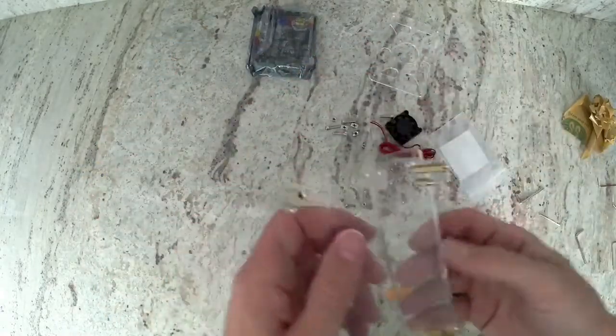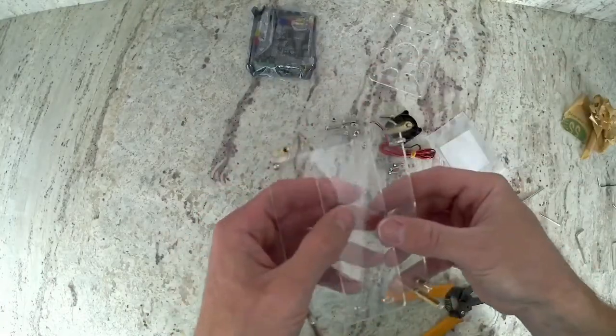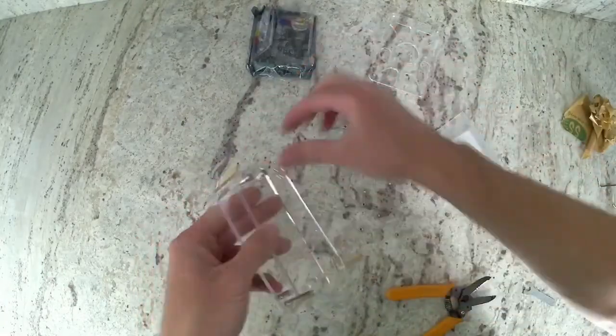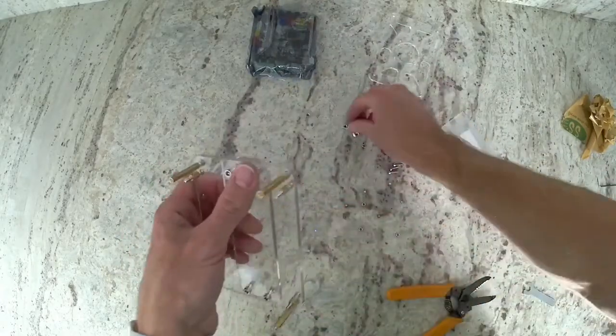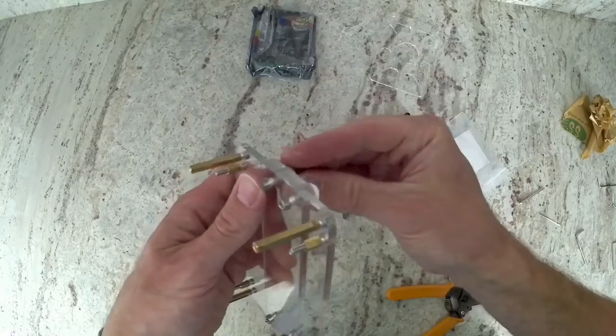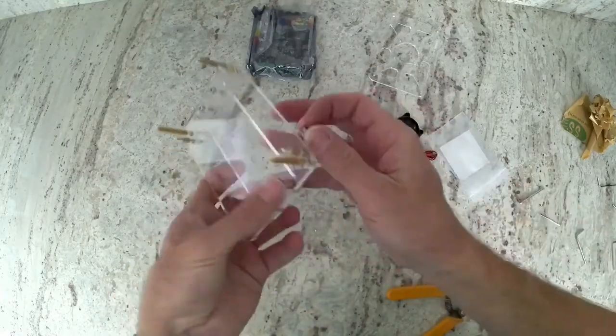Now grab the smaller acrylic panel and grab four M4 bolts and T nuts and install them through there. Only thread the T nuts on a couple threads so that we can tighten them later.